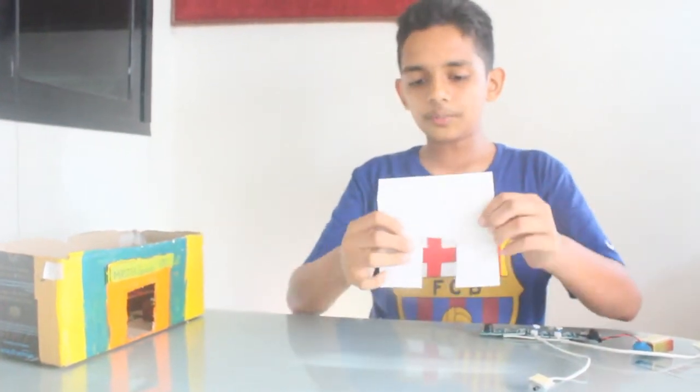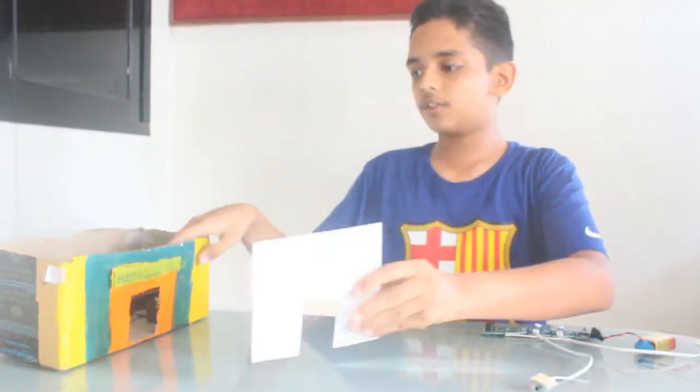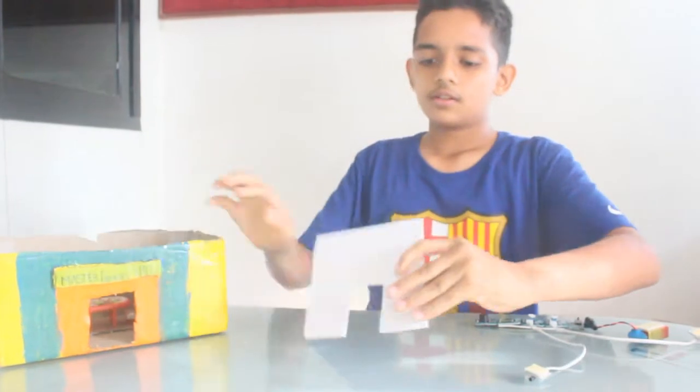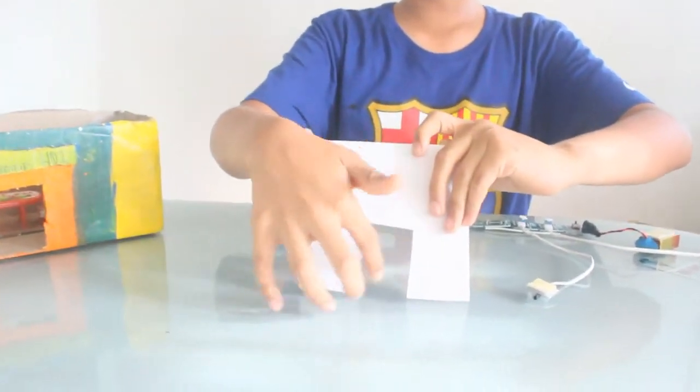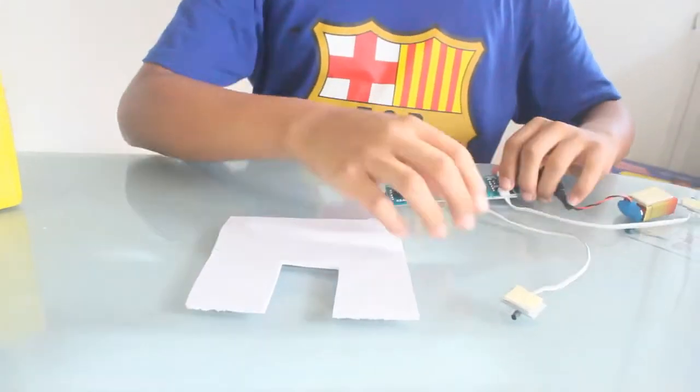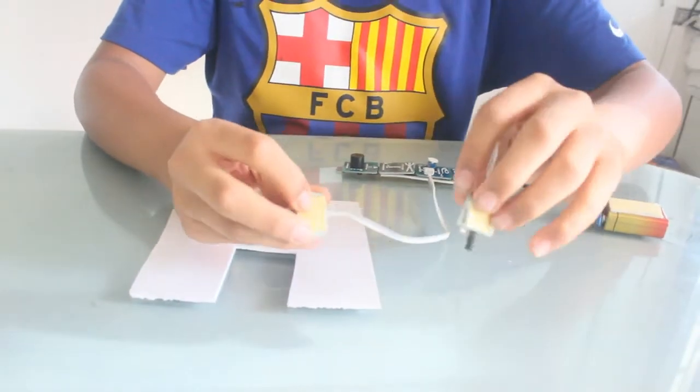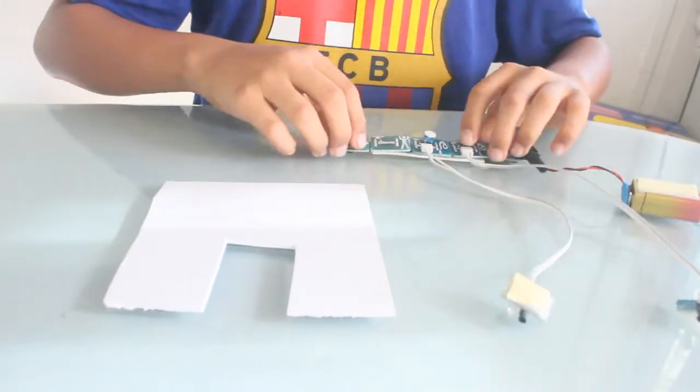I have used this mount board to cut the front of the house like this. So now this is your door area. Now I have put double-sided tape to stick the circuit.